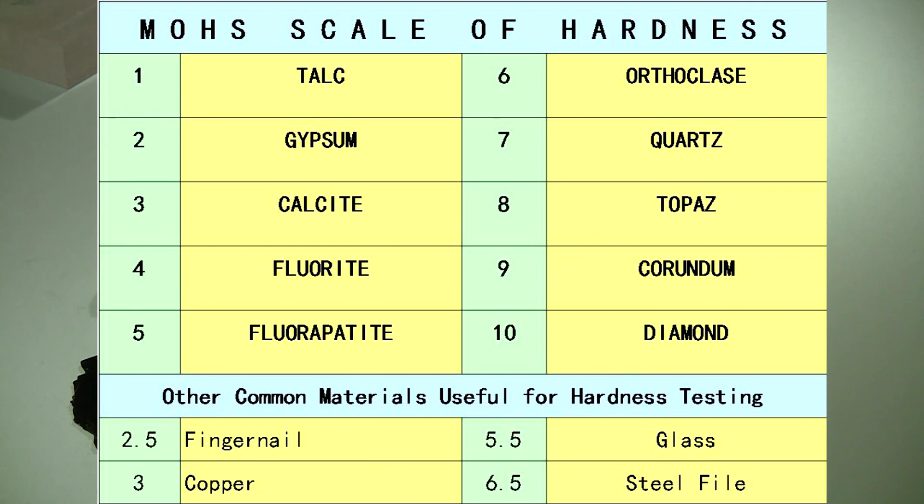Moh's scale of hardness identifies 10 minerals of increasing hardness that are useful in testing other minerals. They include: 1. Talc, 2. Gypsum, 3. Calcite, 4. Fluorite, 5. Fluorapatite, 6. Orthoclase, 7. Quartz, 8. Topaz, 9. Corundum, and 10. Diamond.